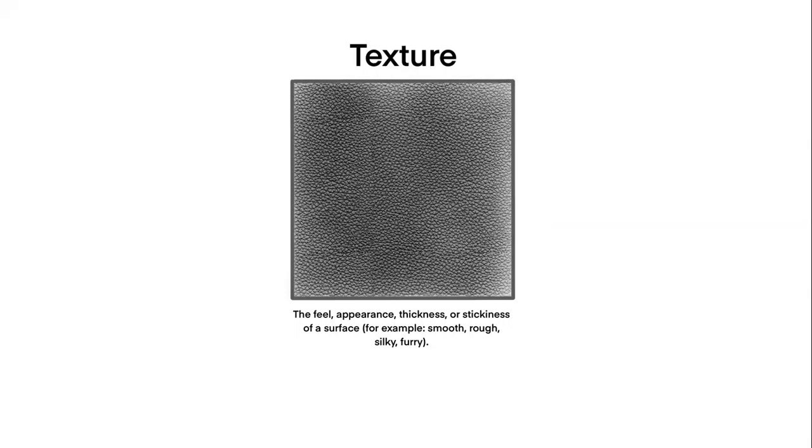Next up is space. It is the area within or between images or parts of an image. It is positive and or negative. In this case, we have the space would be the white area between the two semicircles.